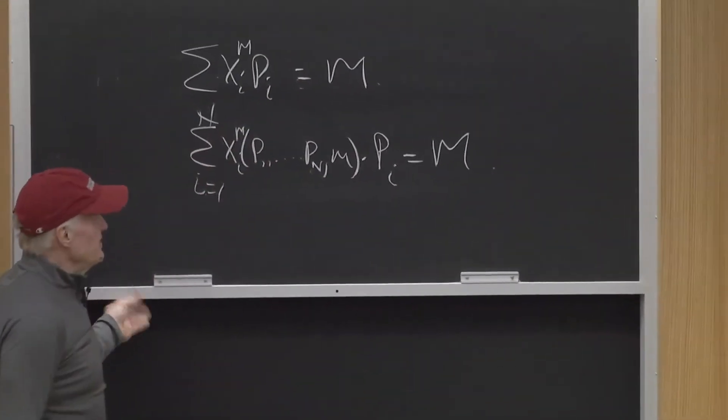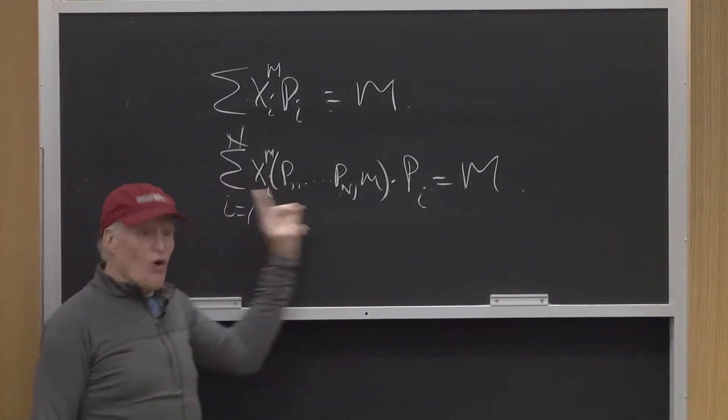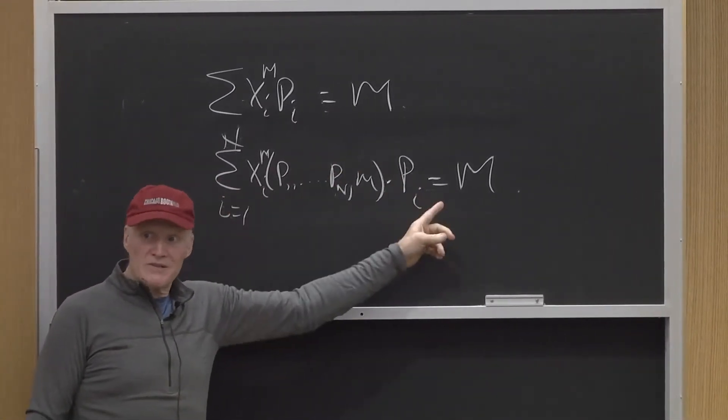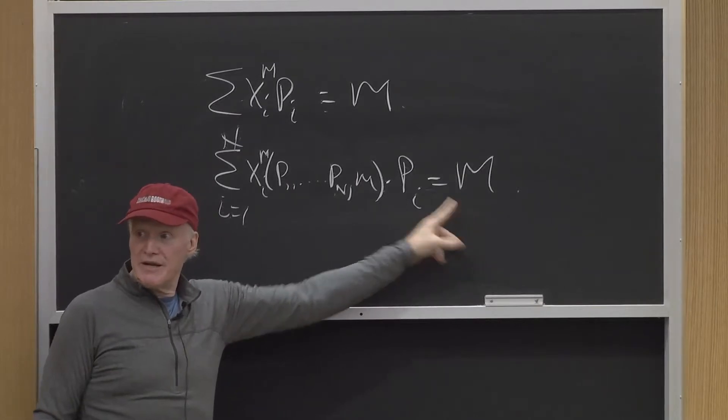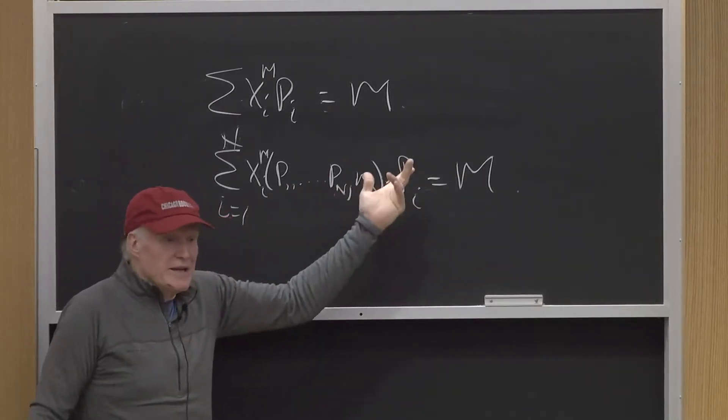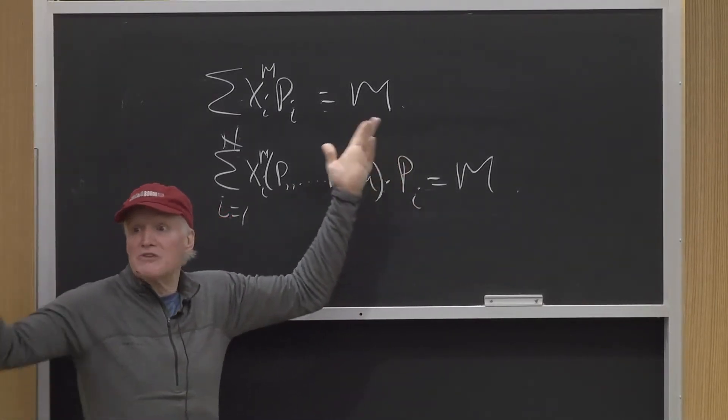So now, let's differentiate this equation. This has to hold for all prices. No matter what the prices are, I've got to satisfy the budget constraint. So I can differentiate with respect to any price I want. So I'm going to differentiate for the price of good j.